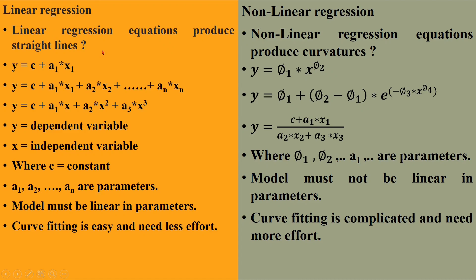You would think that linear regression equations produce straight lines and nonlinear regression equations produce curvature forms. In reality it is not correct. A model is said to be linear when each term is either a constant or it is the product of a parameter with an independent variable. Here we can see c is a constant, a1 is a parameter, x1 is an independent variable, and y is the dependent variable.